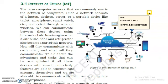If we talk about wireless connections, in a small network we can use hotspots. For larger networks, we make use of Wide Area Network, which we can also call Wi-Fi. We can communicate between these devices using the internet or LAN. Now imagine: what if our bulbs, fans, and refrigerators also became part of this network? How will they communicate with each other, and what will they communicate? Think about the advantages and tasks that can be accomplished if all these devices with smart connectivity features are able to communicate amongst themselves, and we are also able to communicate with them using computers or smartphones.